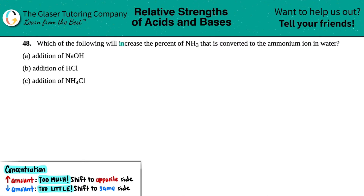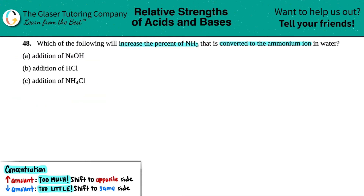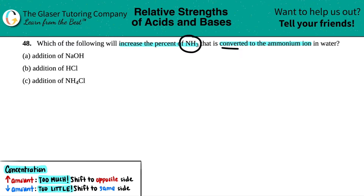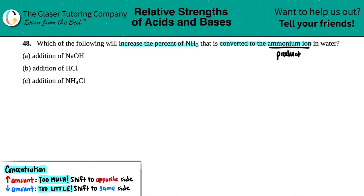Number 48: which of the following will increase the percent of NH3 that is converted to the ammonium ion in water? We have three options, A, B, and C, to evaluate. The first thing we need to do is write a balanced equation — they're talking about NH3 being converted, which means making it into a product. So NH3 (ammonia) plus water, with ammonium ion as a product.